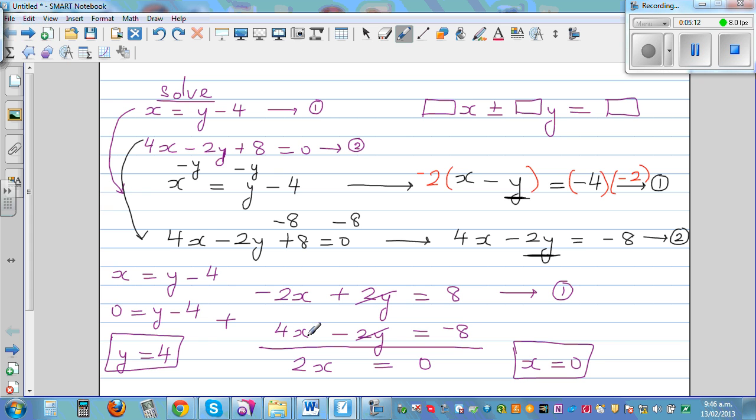So let's check. If x is 0, so 4 minus 4 is 0. So that's working there. 4 times 0 is, so let me check it here. So what we are saying is 4 times x, so 4 times 0, minus 2 times 4.